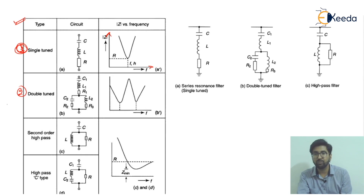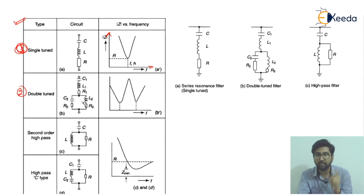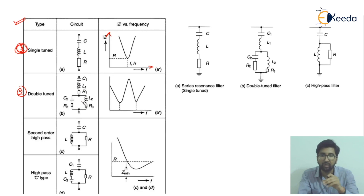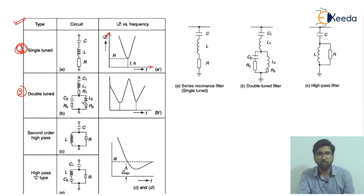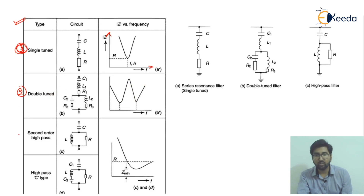For the double tuned filter, it has a capacitor, inductor, and resistor, plus two branches each containing a capacitor-resistance-inductor-resistance combination. This is called the double tuned filter. Its waveform is a double-dip or double-V type curve, which is why these are called double tuned filters.